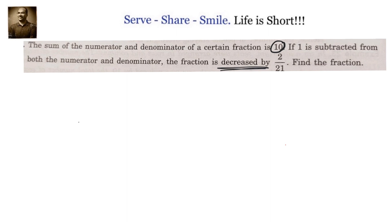We have been given that the sum of numerator and denominator of a certain fraction is 10. So we can take the numerator as x, then the denominator will be 10 minus x. If one is subtracted from both, the numerator will become x minus 1 and the denominator will become 10 minus x minus 1.